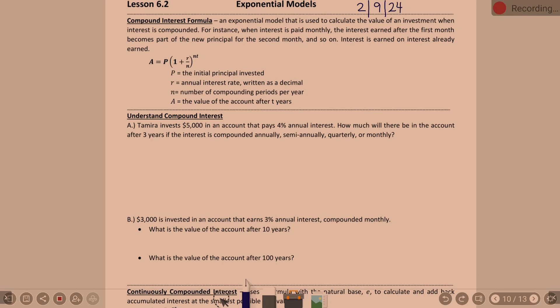A lot of this is plug and chug, to be honest. I'll use a calculator. Some of it is going to be manipulating and solving, but more than anything, at this stage in the game, plug the values in. Tamara invests $5,000 in an account that pays 4% annual interest. How much will be in the account after three years if the interest is compounded annually, semi-annually, quarterly, or monthly?